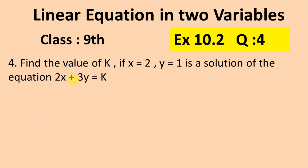So we have to find the value of k from this equation. We write first the solution. The value of x and y is given: x equals 2, y equals 1. Then we write our equation that is 2x plus 3y equals k.